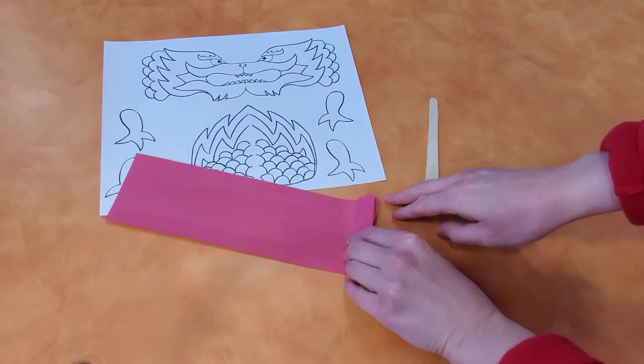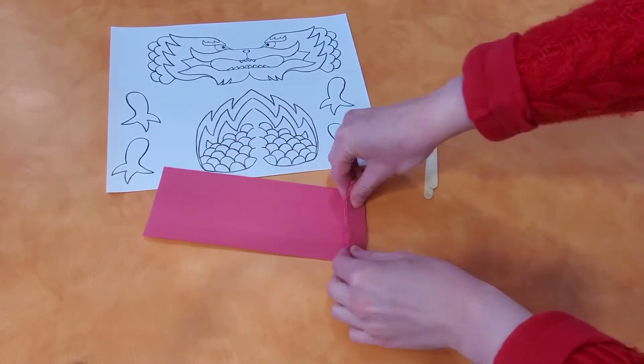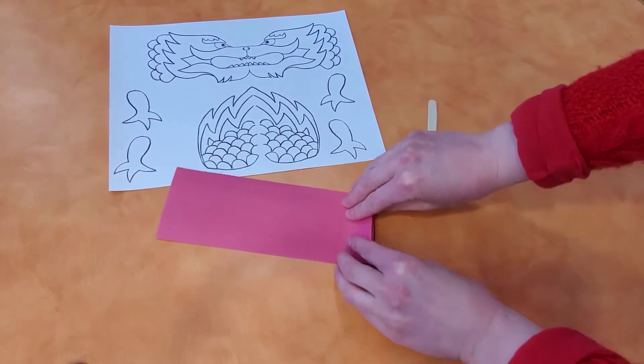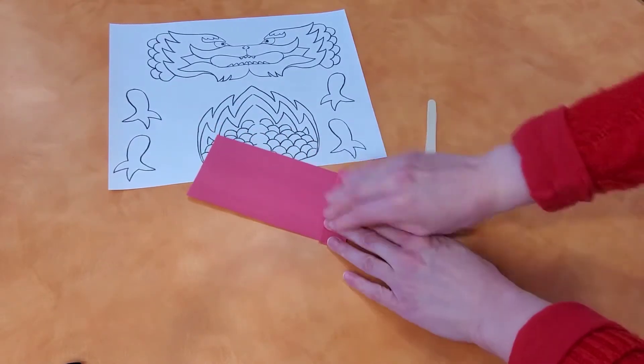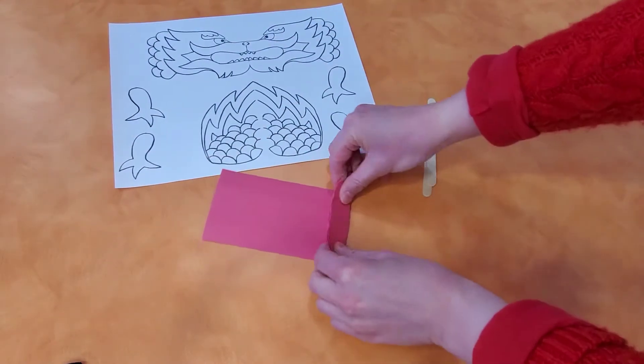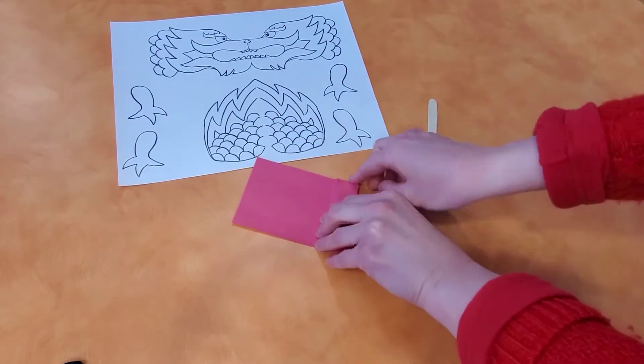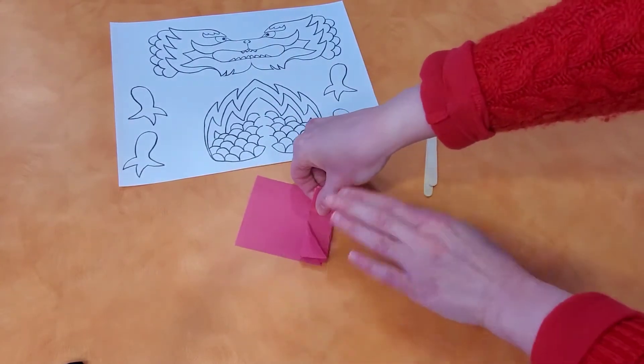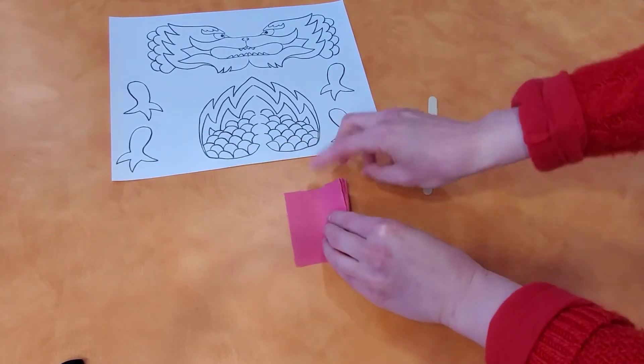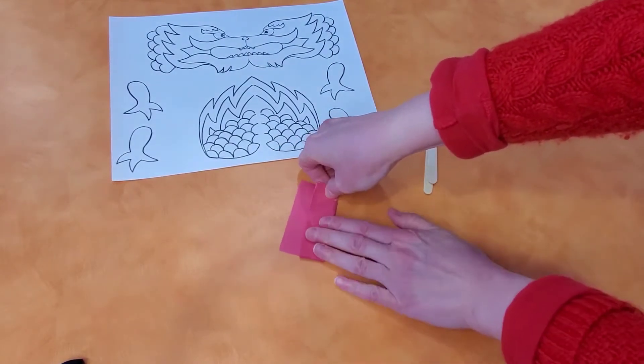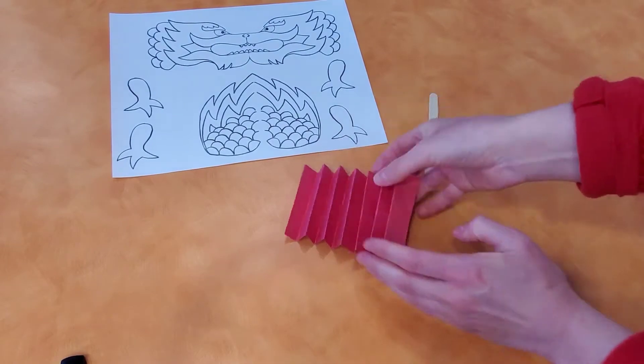You fold it and then flip over, and you fold it, and then you flip over. You keep doing this until you reach the end. Fold it and then flip over, fold it, and then you flip over. Ta-da! And that's like an accordion.